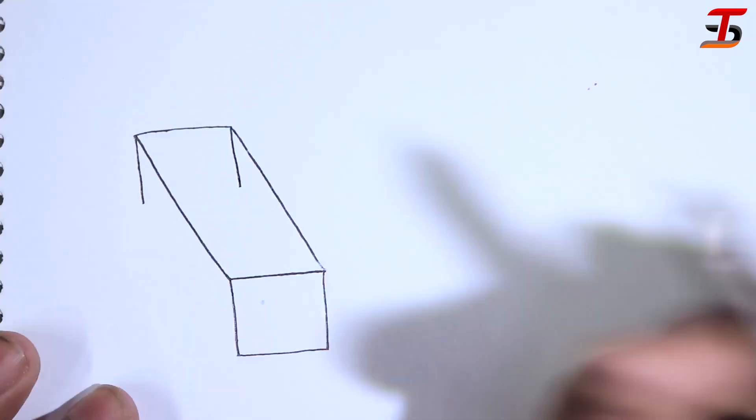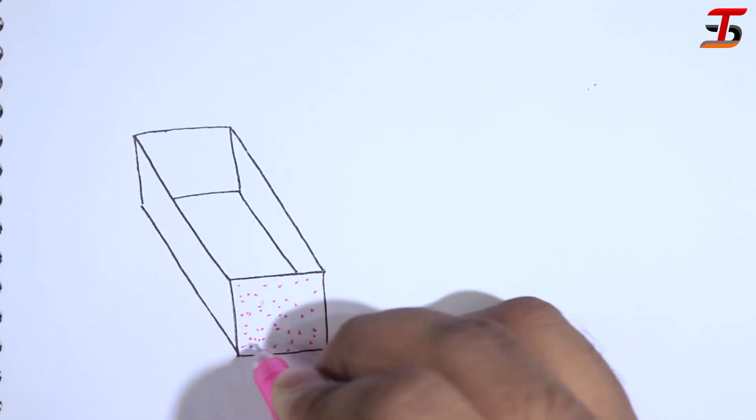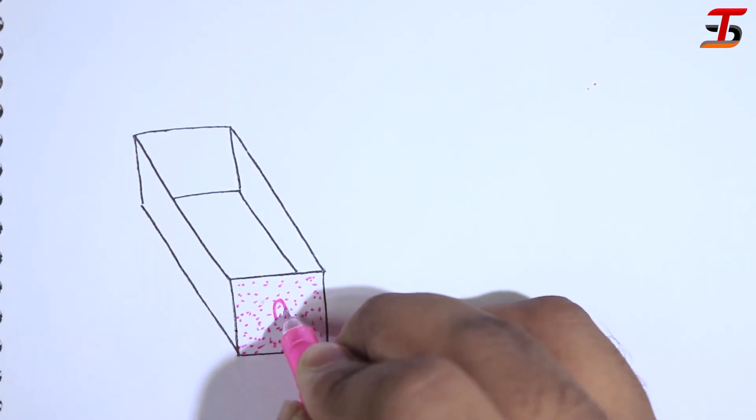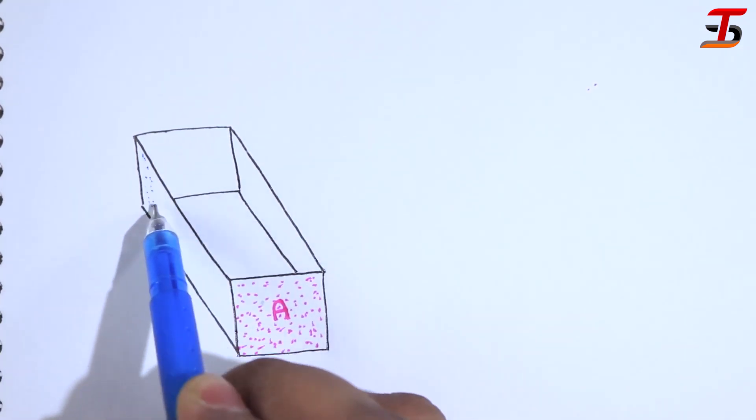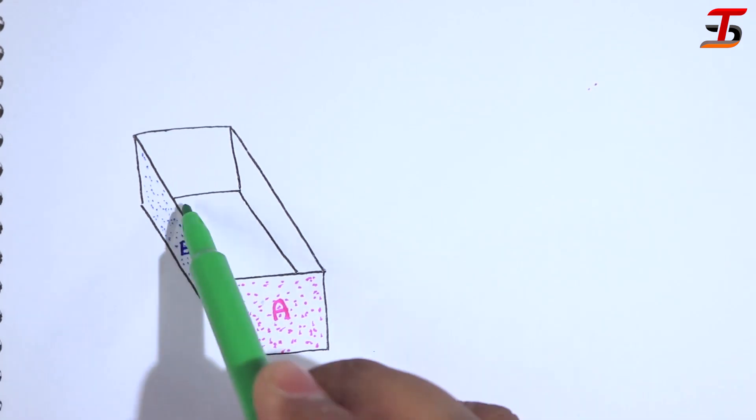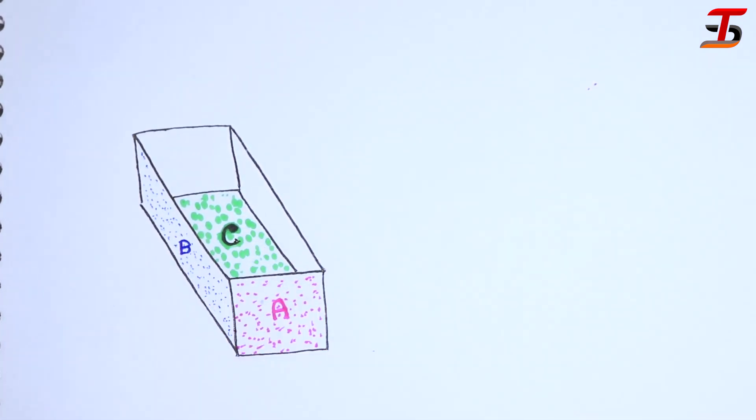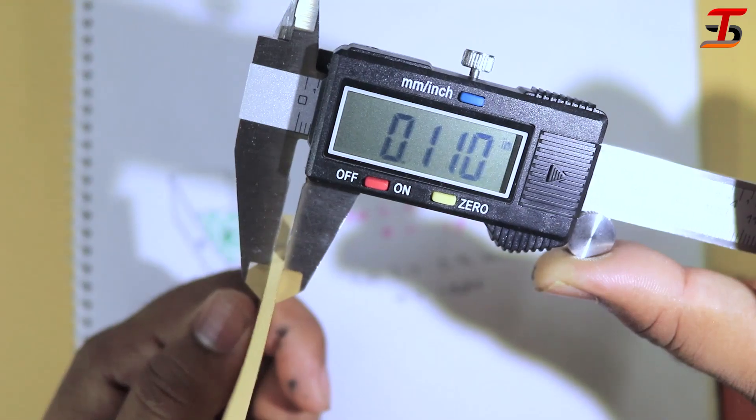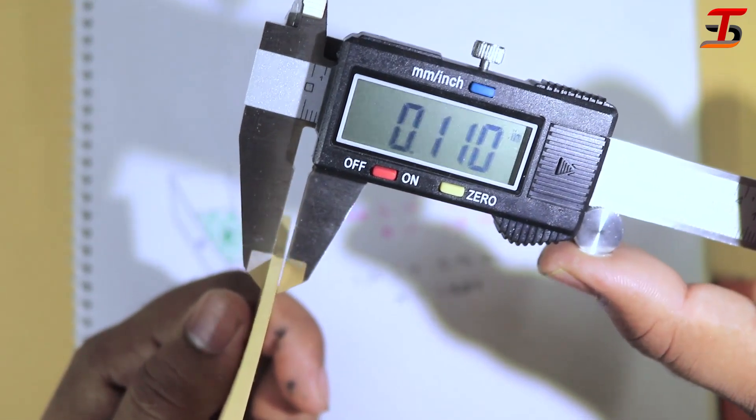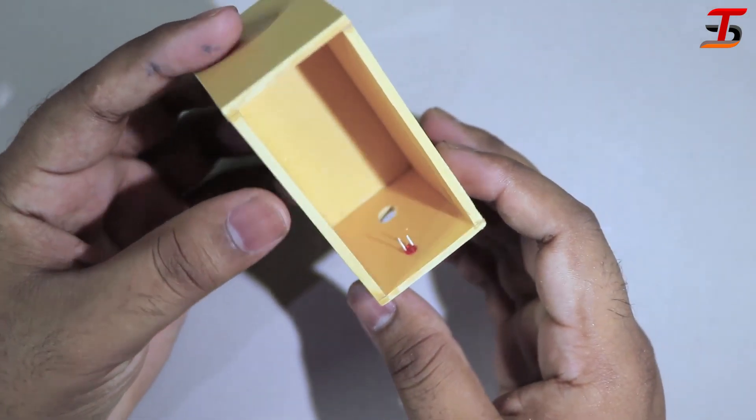I just drew a box which will look like this. To make this, I used 3mm PVC board. After cutting, I just made this box.